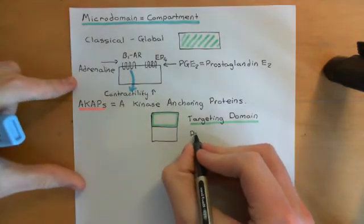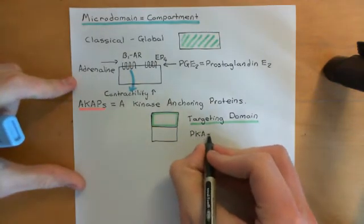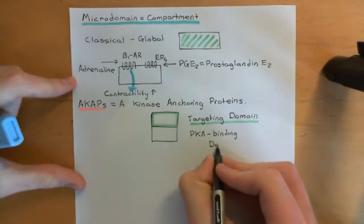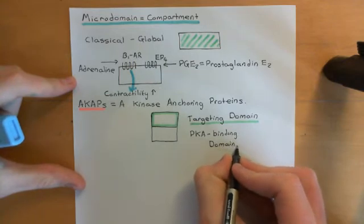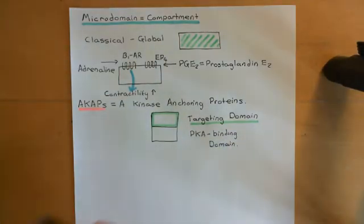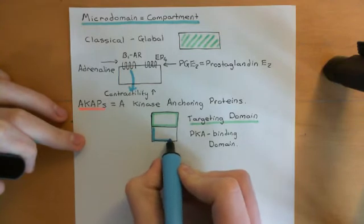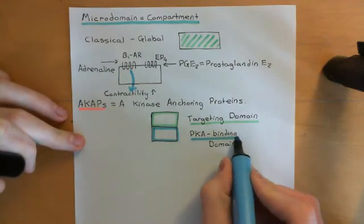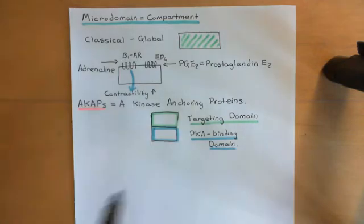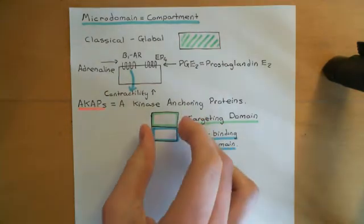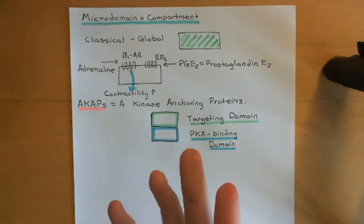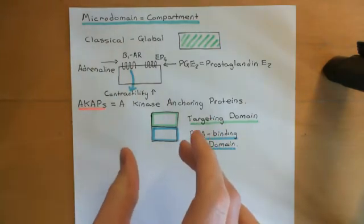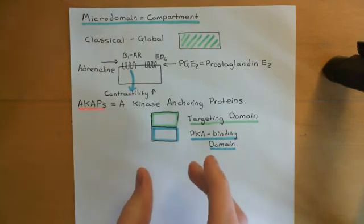The other domain is the protein kinase A — or PKA — binding domain. This is where the A-kinase anchoring protein is going to bind to protein kinase A. Basically, the idea is that AKAPs are scaffold proteins: they localize to some subcellular location and then bind protein kinase A tetramers in the inactive form.